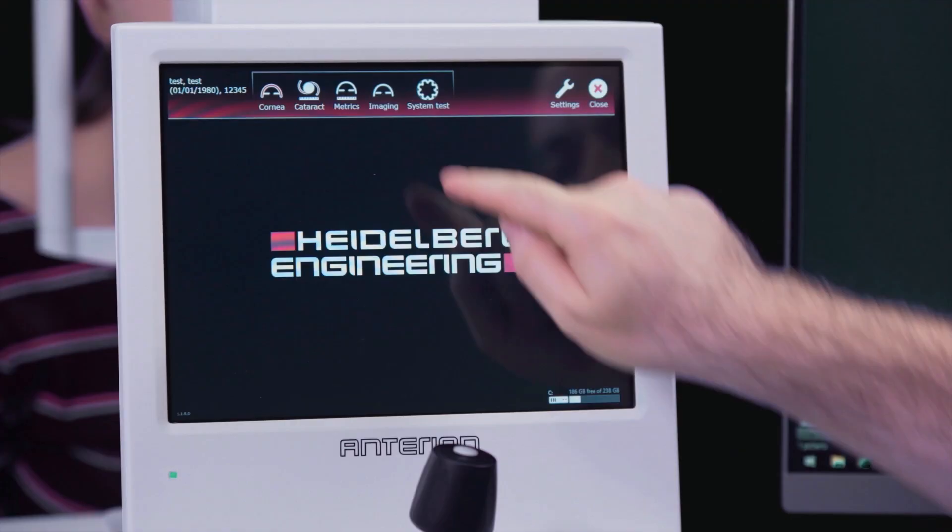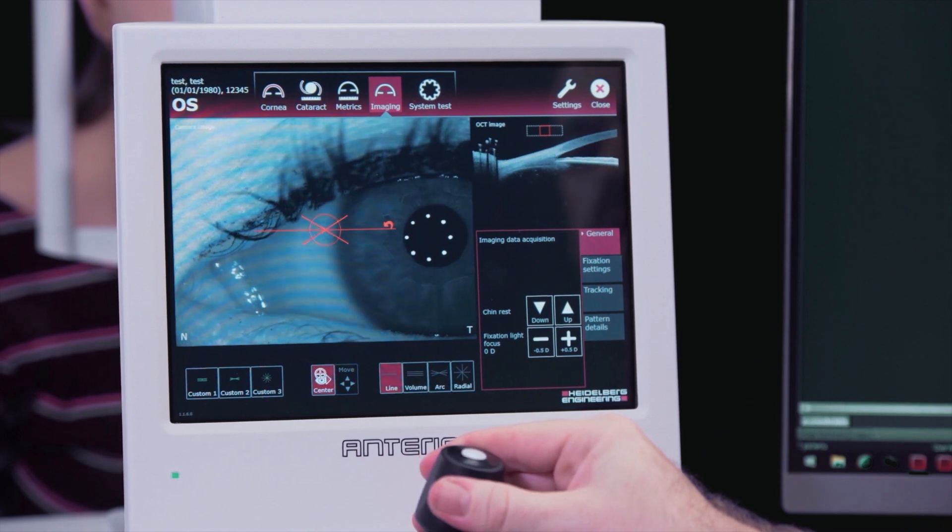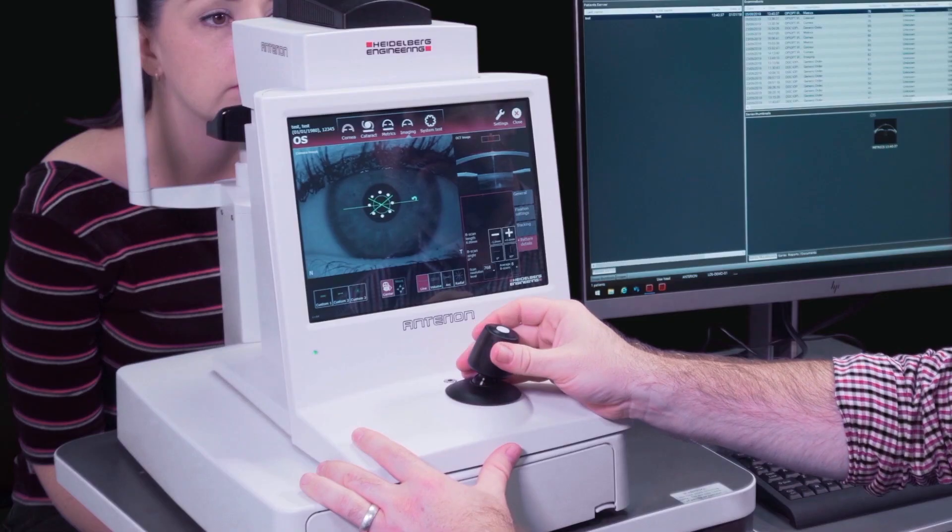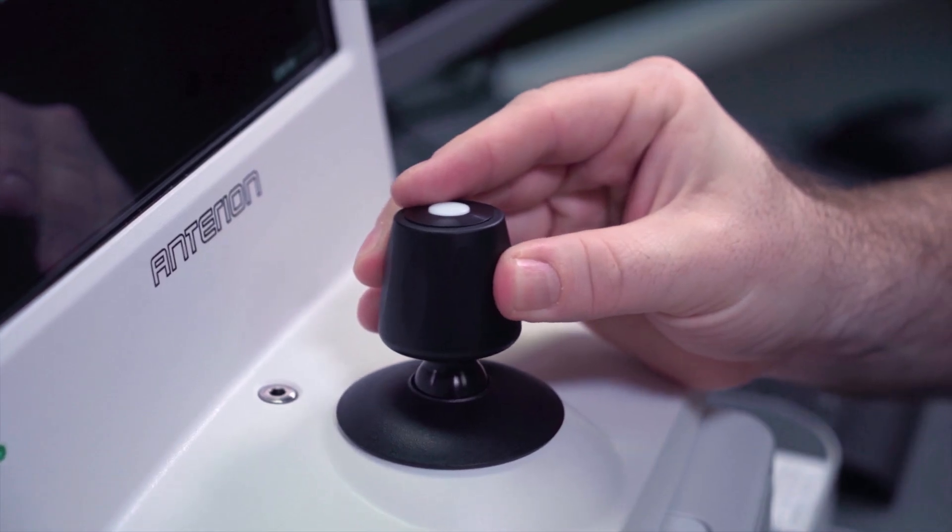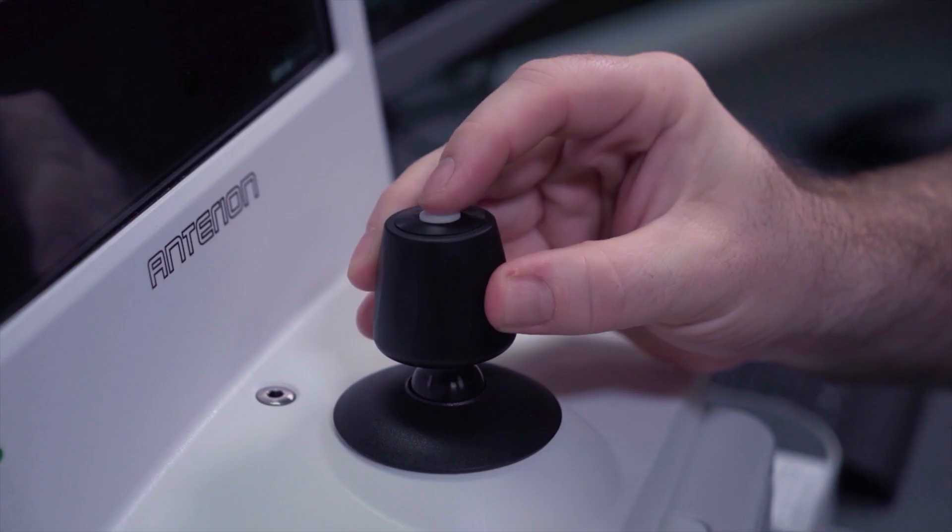Select the imaging app. The imaging app defaults to a single 8mm line. Align the patient in the camera image and OCT image windows. Ask the patient to blink before acquiring.